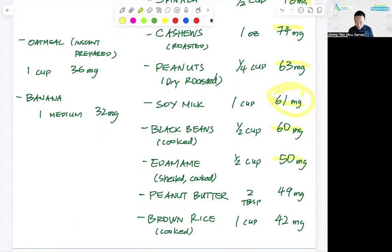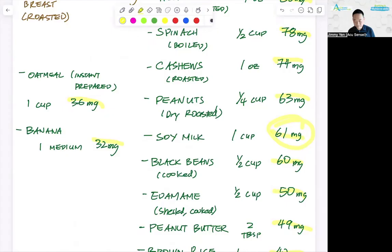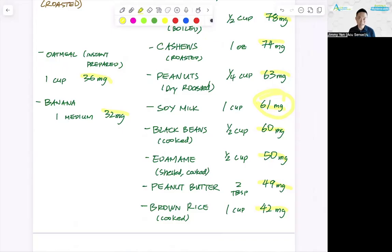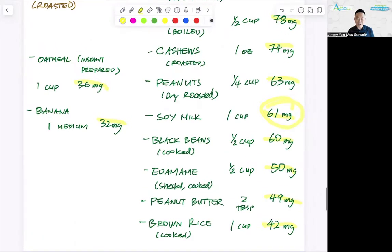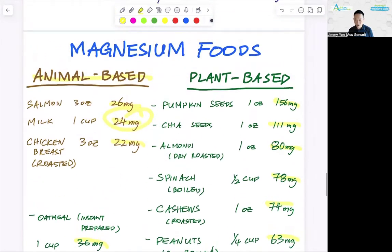Edamame shelled and cooked half a cup, 50 milligrams of magnesium. Peanut butter, no added sugar, two tablespoons, 49 milligrams. Brown cooked brown rice, 42 milligrams, one cup. And oatmeal, instant or prepared, one cup is 36 and a banana, 32 milligrams. So not a lot of fruits. Really just one fruit on this list. Mostly nuts are your winners for magnesium. And nuts and seeds also have oil. So they also will help you with your digestive system at the same time.